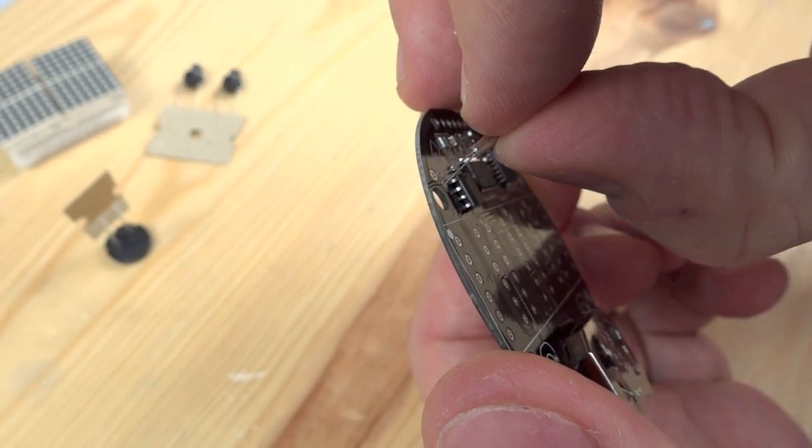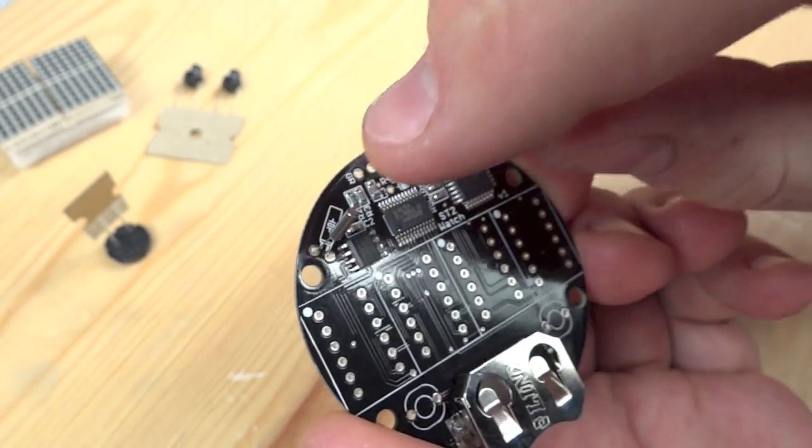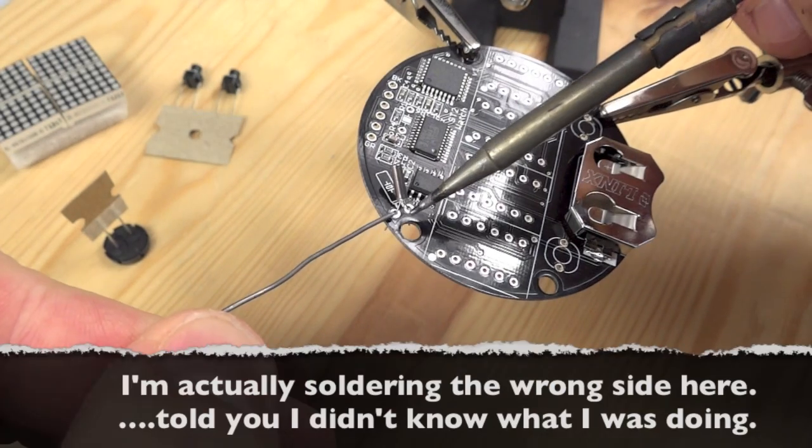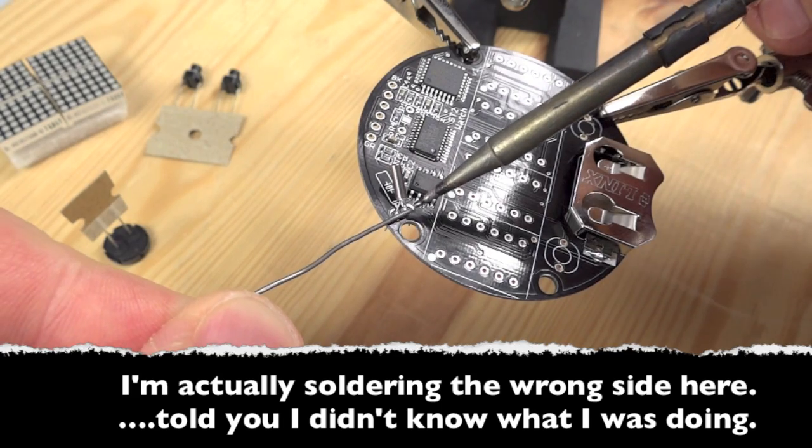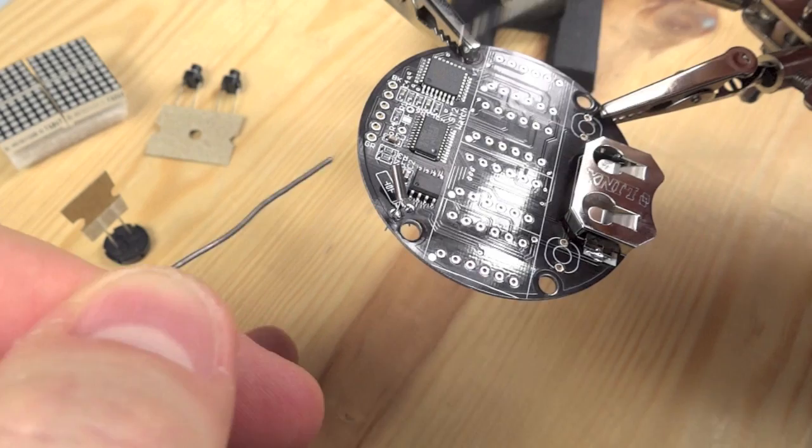Next thing, the timing crystal. That's a very small piece there. It just goes through those two holes at the top. Again, solder the legs on the back of it, and trim those legs off using the trimming tool.